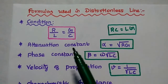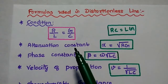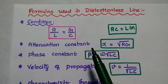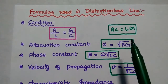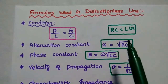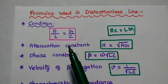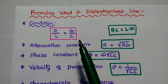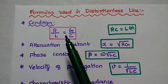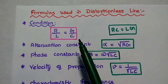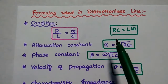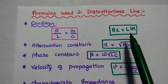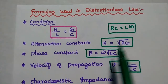Before going to solve the problems, let's discuss important formulas used in distortionless line. The condition for distortionless line is R by L is equal to G by C, which can also be written as R C is equal to L G.